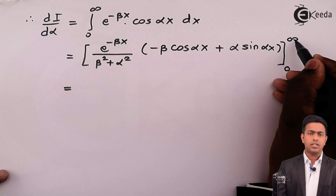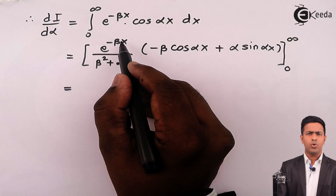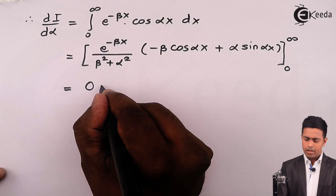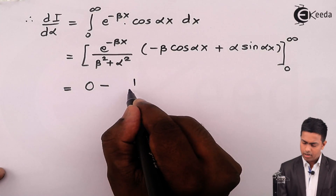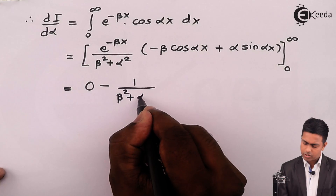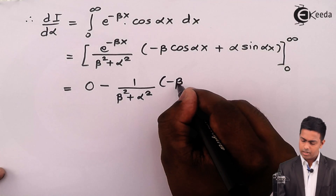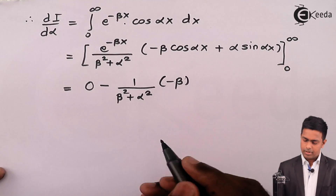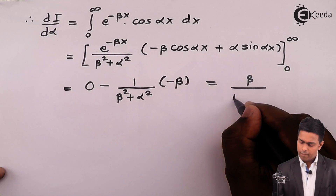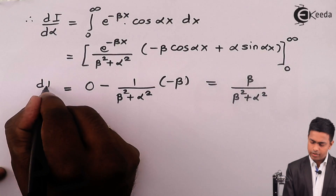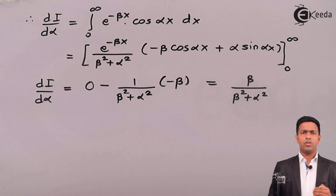Substituting the upper limit as infinity: e raised to minus infinity is zero, so the whole value becomes zero. Substituting the lower limit zero: e raised to zero is one, upon (beta squared plus alpha squared). Sin(0) is zero, so we get minus times minus, which is positive beta upon (beta squared plus alpha squared), as the value of dI by d alpha. Step two is now done.